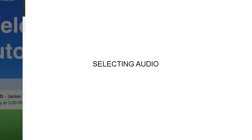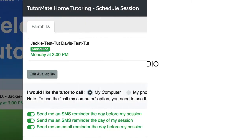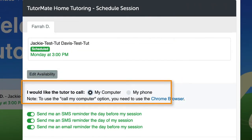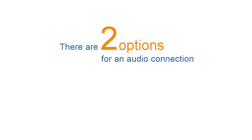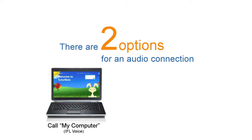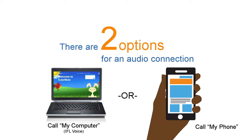Step 2: Select the audio option. You will need to indicate how you want the volunteer to call your child for the next session. There are two options available for the audio connection: using the audio on your computer, also known as IFL voice, or using a mobile phone. Both options are available when using a desktop or laptop computer.